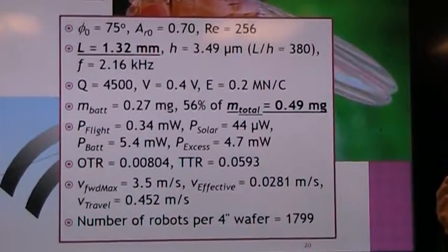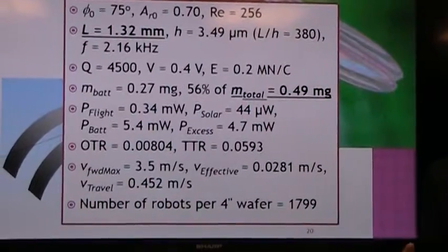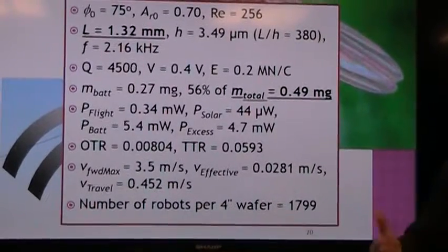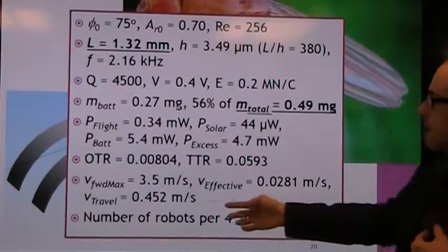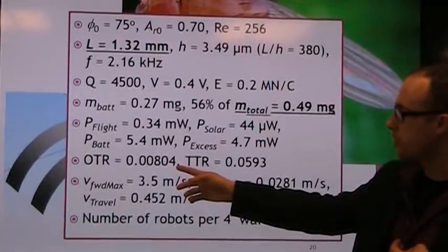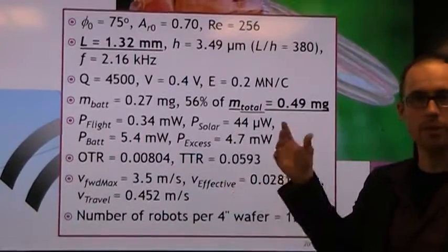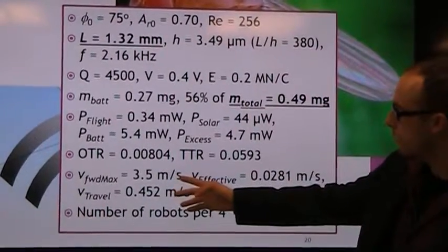But unfortunately, on this small size scale, we're into the Reynolds number regime where flight's not as optimal as it was at larger Reynolds numbers. So things start to drop off, and again, it can't operate for a huge amount of its total time. It has to stop and recharge quite frequently. So the burst velocity.